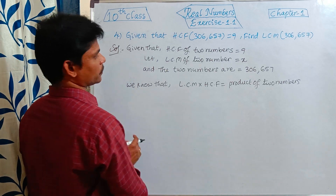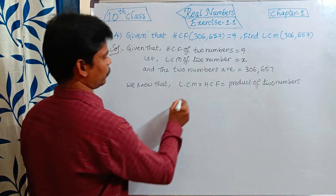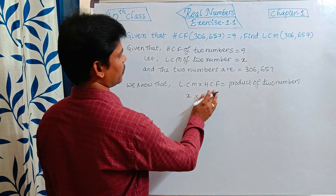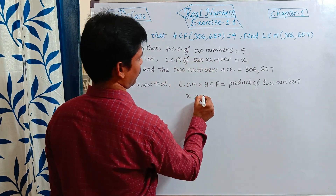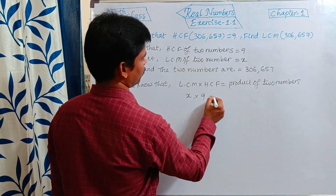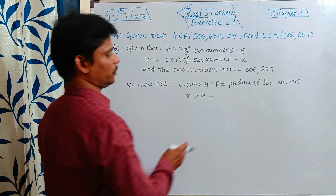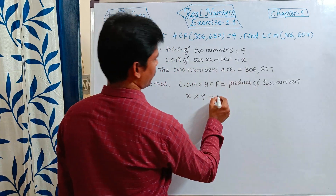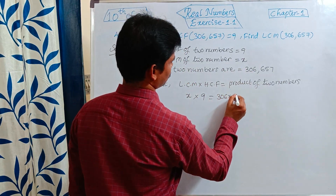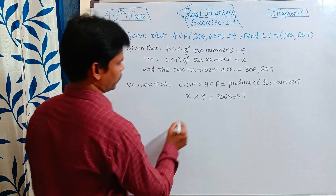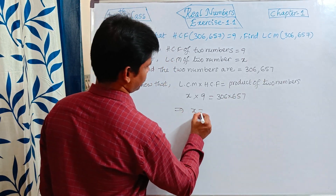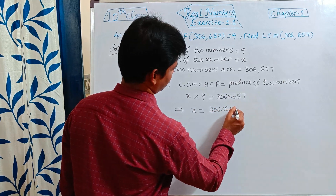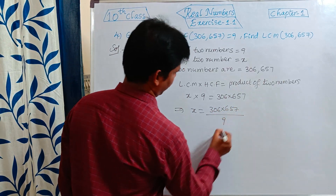So here, LCM — we don't know, take it as X. HCF of the two numbers is 9. That is equal to product of two numbers, which means 306 × 657. Find out X: X = (306 × 657) / 9.